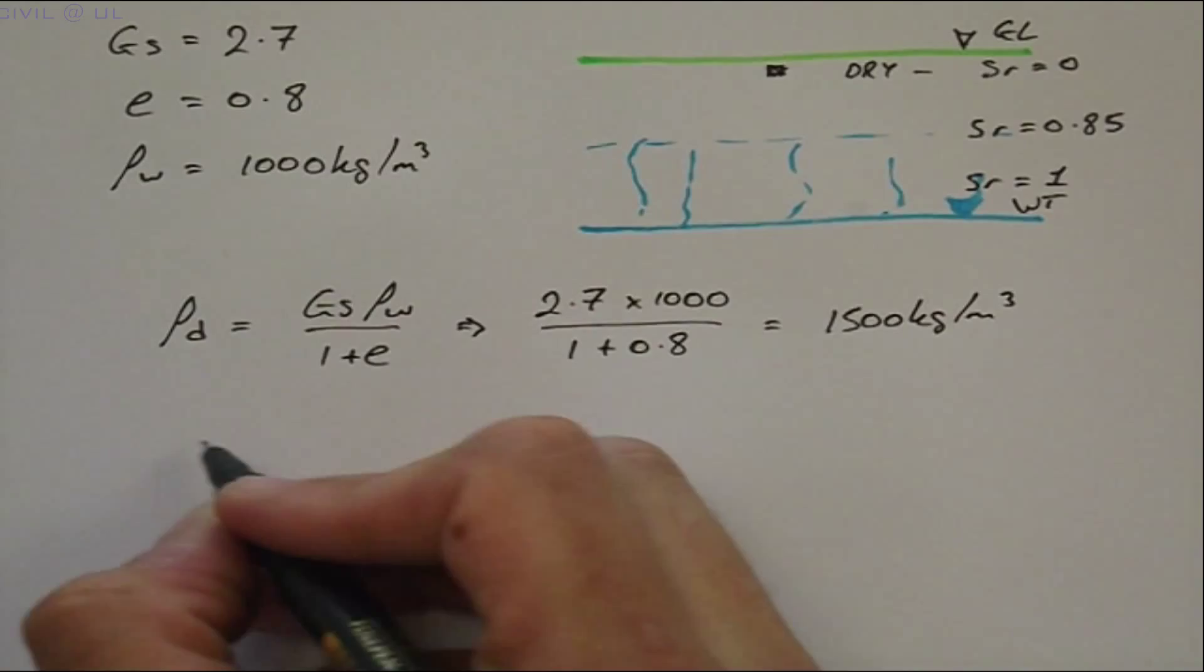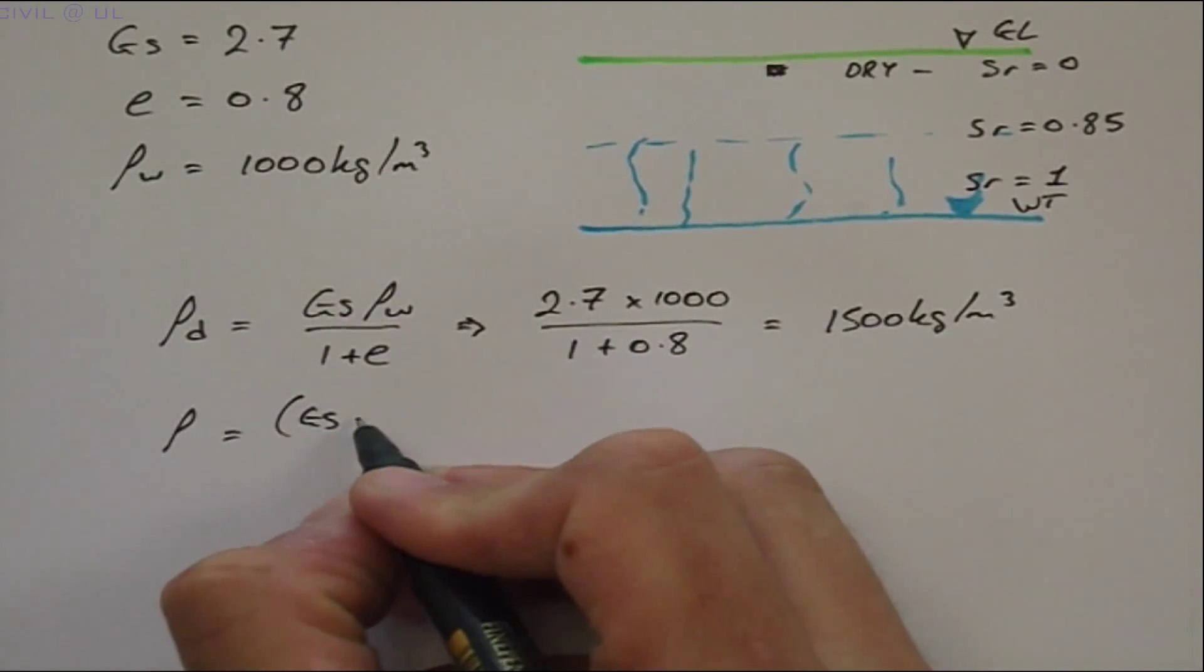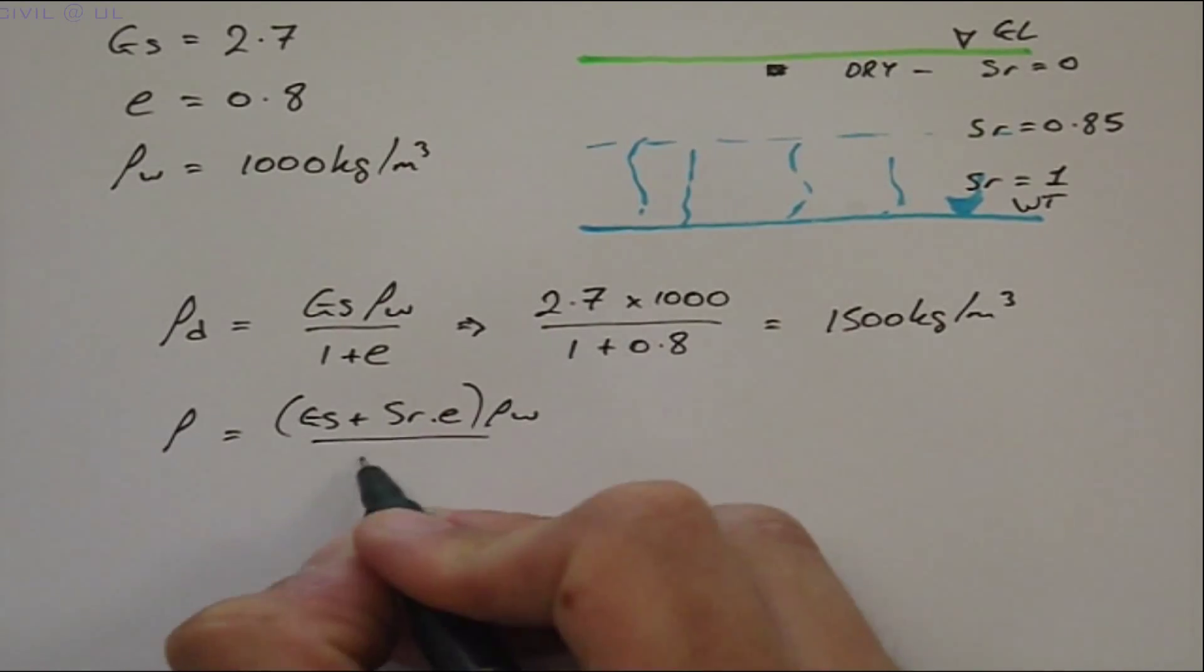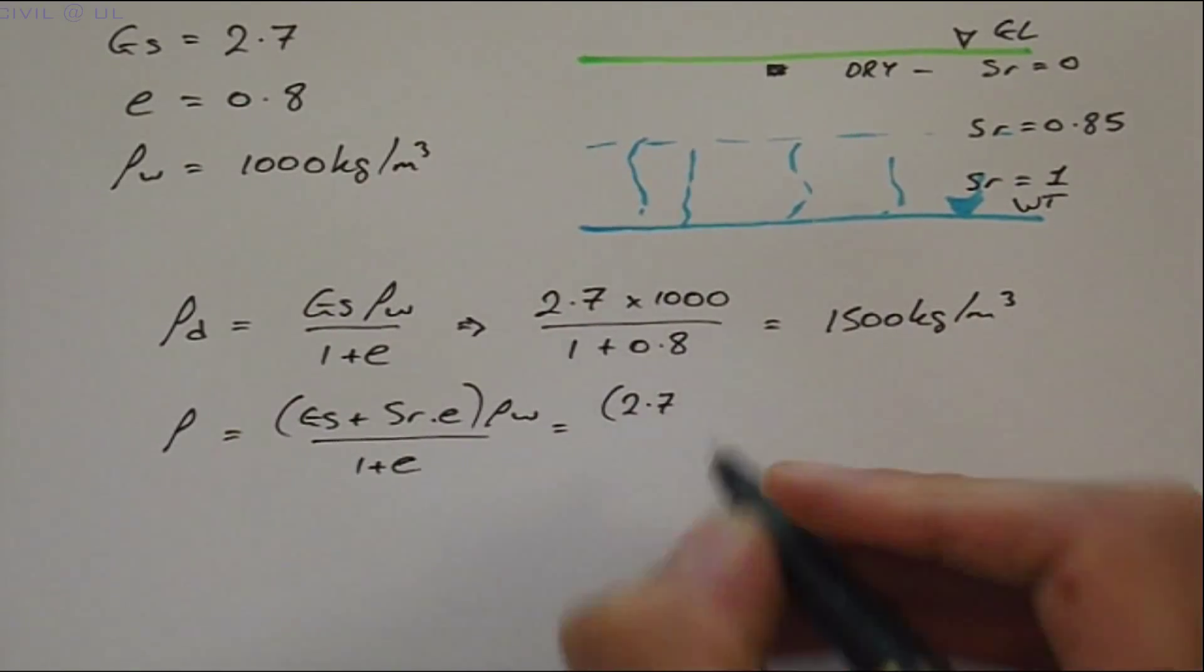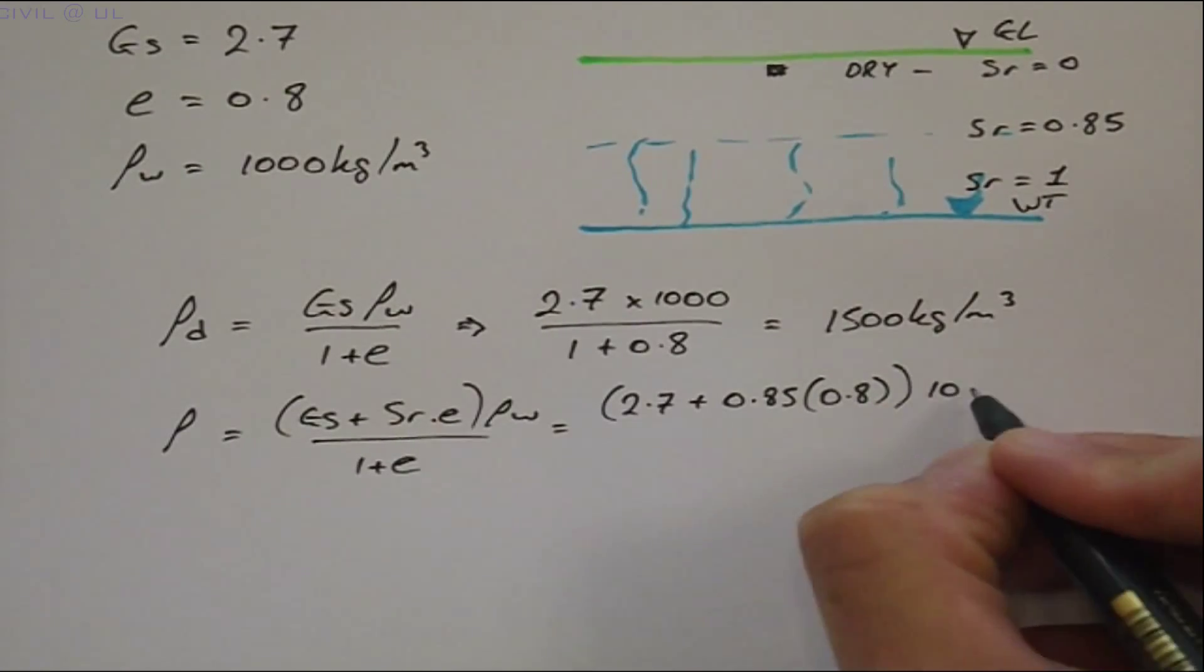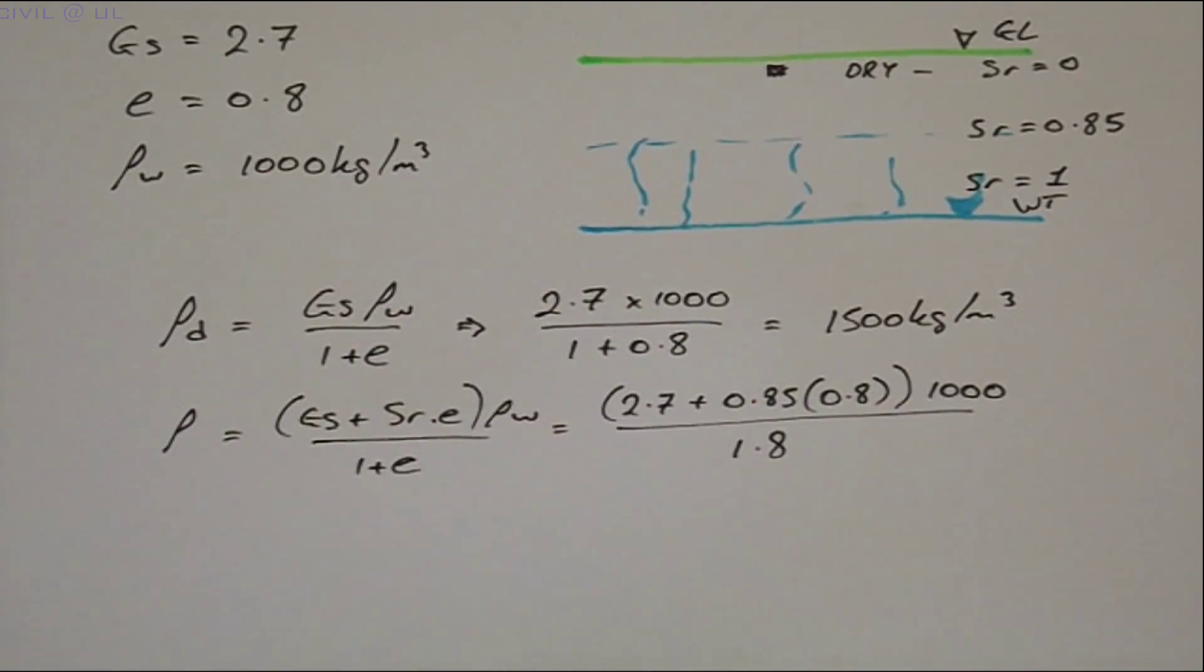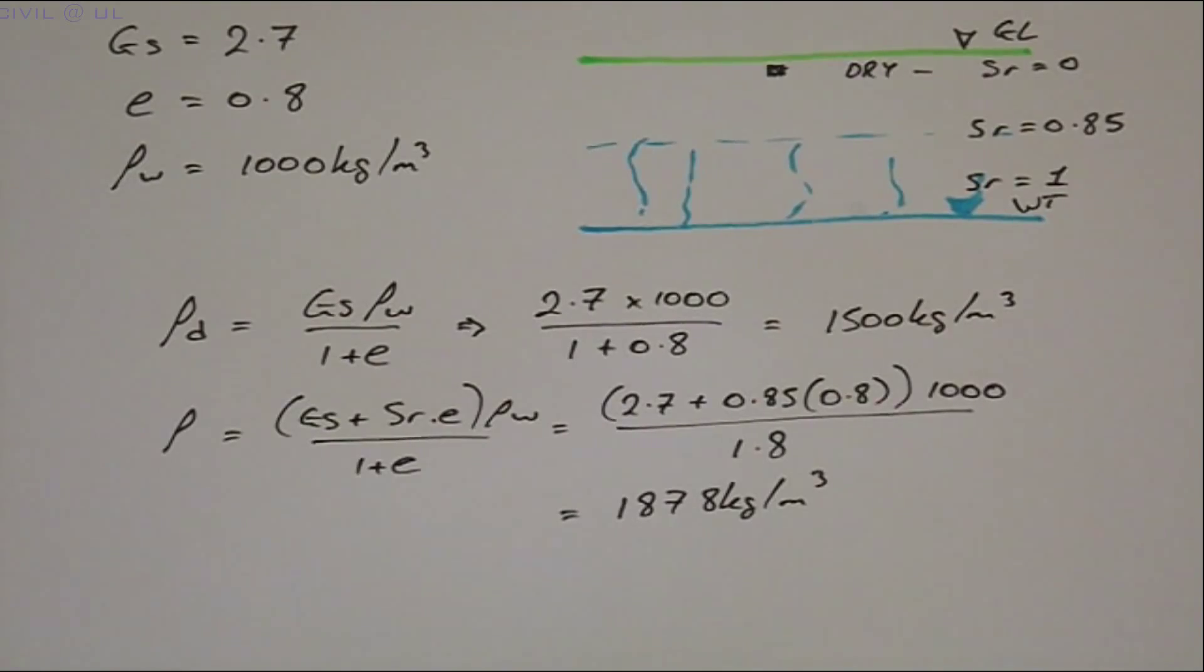The bulk density is equal to GS plus SR times E, all multiplied by ρW, divided by 1 plus E. Substituting gives us 2.7 plus 0.85 multiplied by 0.8, and all multiplied by 1000, and divided by 1.8. This gives us a bulk density of 1878 kilograms per meter cubed.